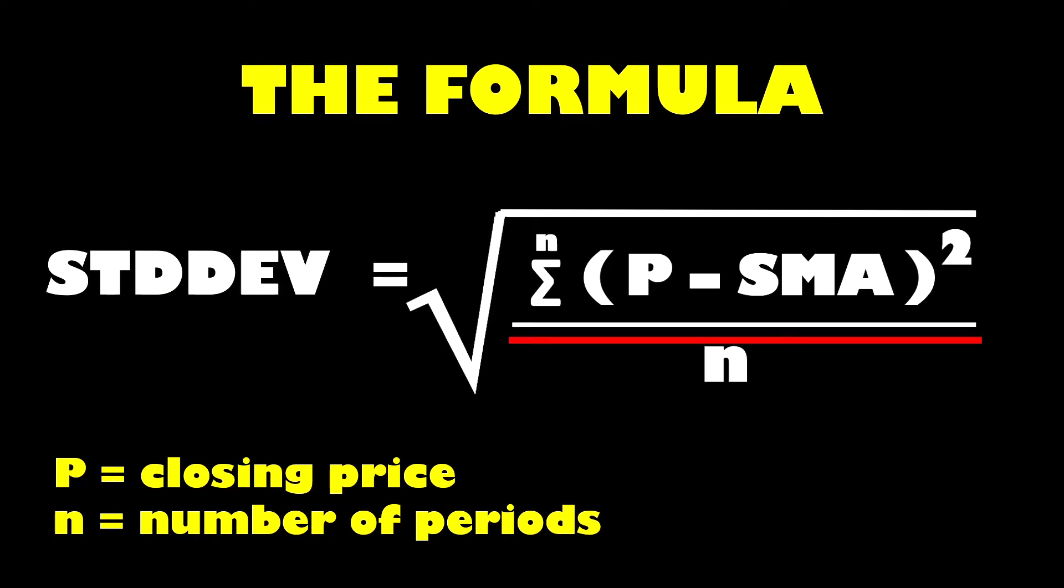You can then take that total and divide it by 14 periods or whatever input you're using. That total is the figure known as the variance. Then finally to calculate our standard deviation value we can square root that variance figure.